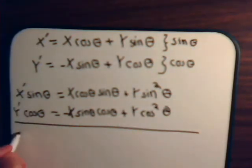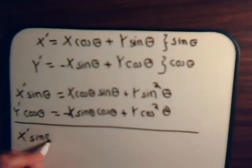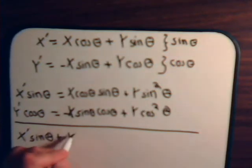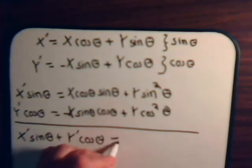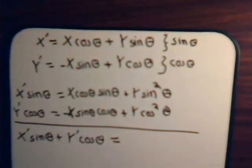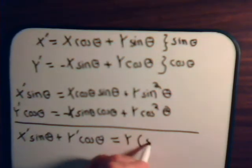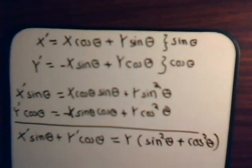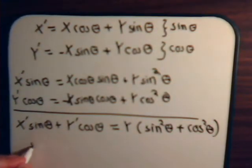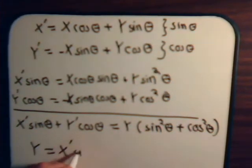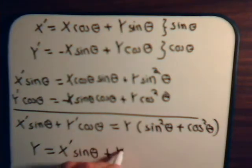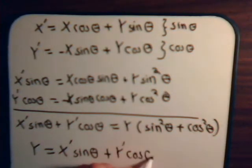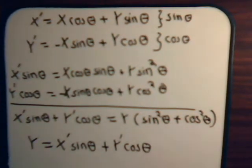Here we have x prime sine of theta plus y prime cosine of theta equals — the cross terms drop out — y times sine squared theta plus cosine squared theta, which is 1. So this works out well: y equals x prime times the sine of theta plus y prime times the cosine of theta. Now we have y expressed in terms of x prime and y prime.